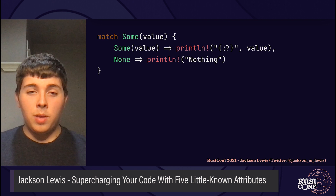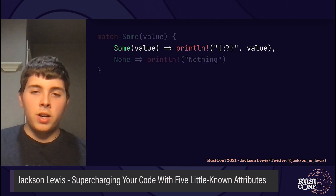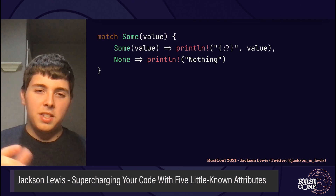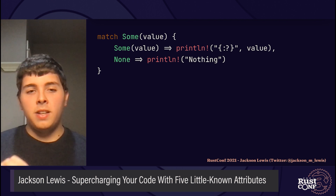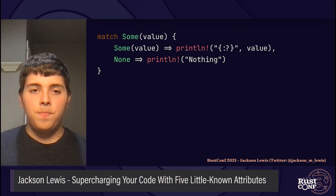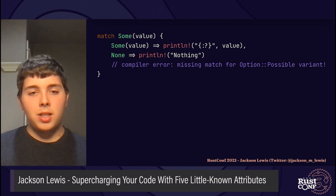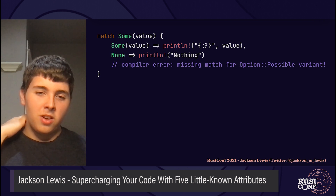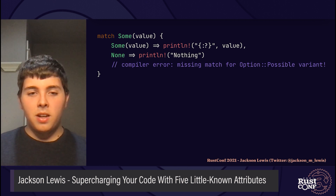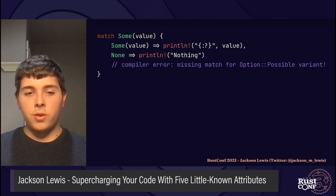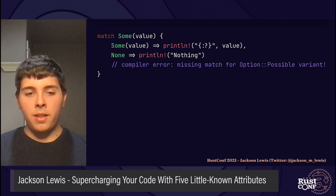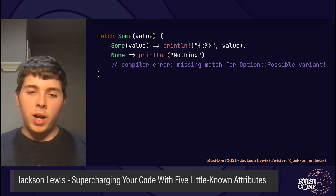Currently, people can write code that matches on an Option like so — we have a branch that matches on the Some variant, and a branch that matches on the None variant. This code is an exhaustive match, since it matches on all the variants of the enum. However, with the introduction of the new Possible variant, this match on Option will no longer be exhaustive, and this code will fail to compile. Exhaustive matches are fragile to changes in enum variants or struct fields. Because of this, crate maintainers can often feel pressure to push a new major version every time they make modifications to public enums or structs, worried that the changes will break downstream crates. But is there a way to prevent this from happening?